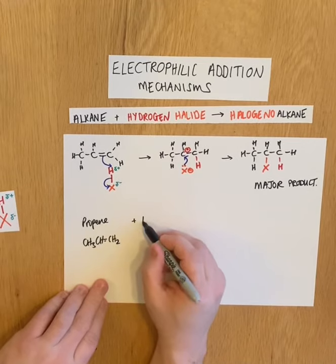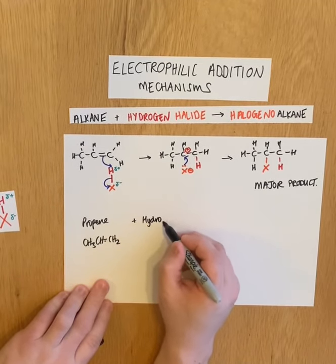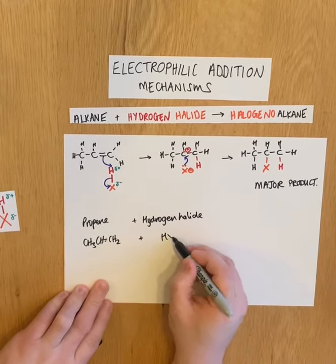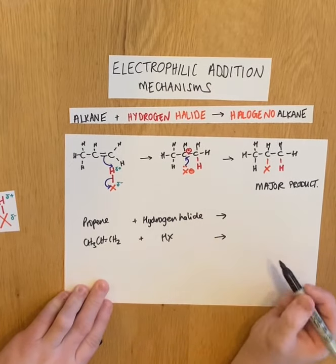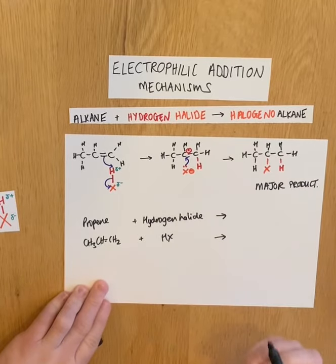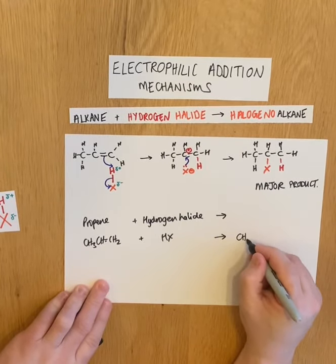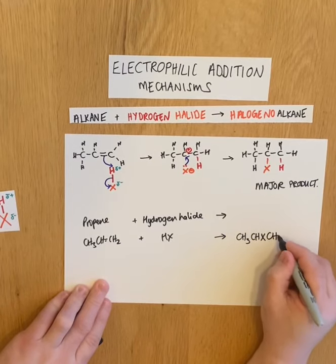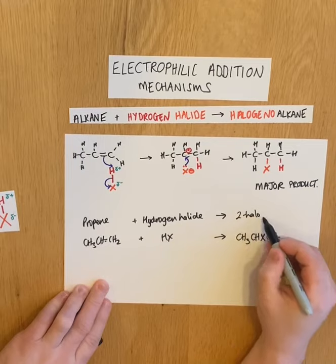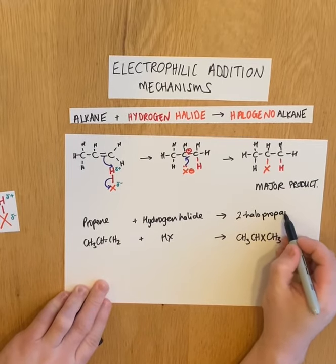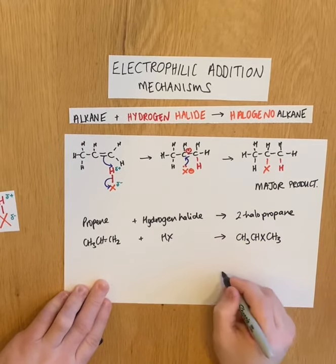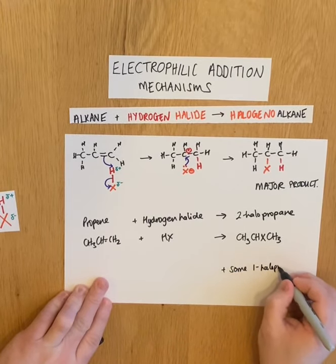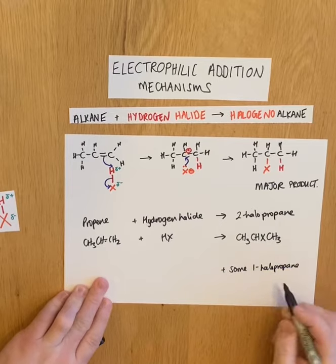So propene (CH₃CHCH₂) reacted with a hydrogen halide in an addition reaction to give the major product 2-halopropane, plus some 1-halopropane as the minor product.